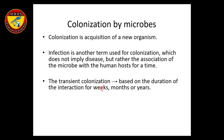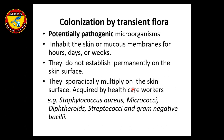Transient colonization is based on the duration of interaction: weeks, months, or years. Transient flora are potentially pathogenic microorganisms that inhabit the skin or mucous membranes for hours, days, or weeks. They do not establish permanently and sporadically multiply on the skin surface. Examples acquired by healthcare workers include Staphylococcus aureus, Micrococcus, Diphtheroids, Streptococcus, and gram-negative rods.